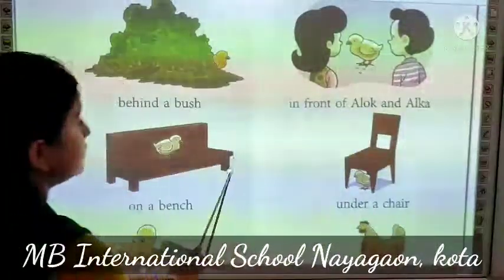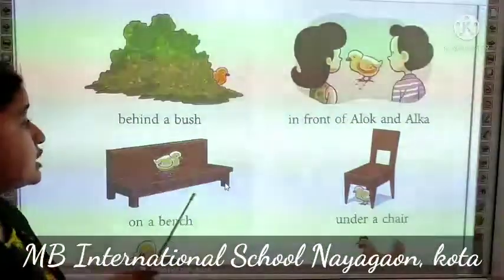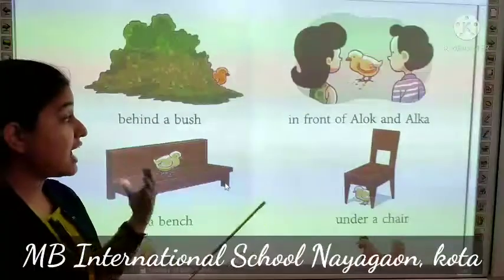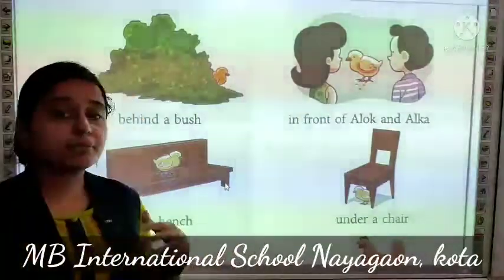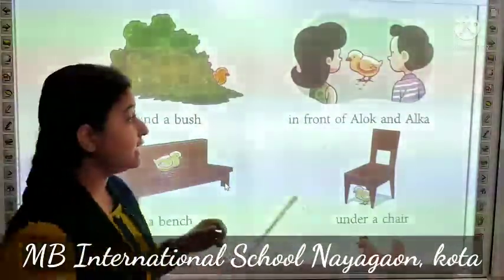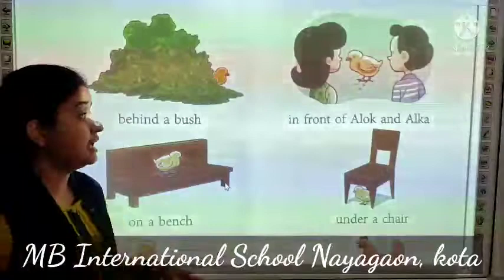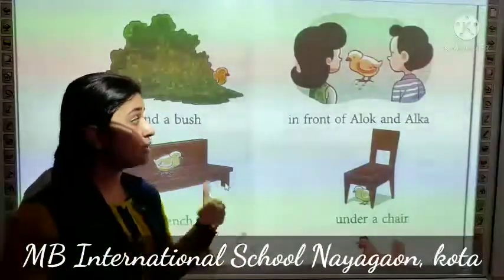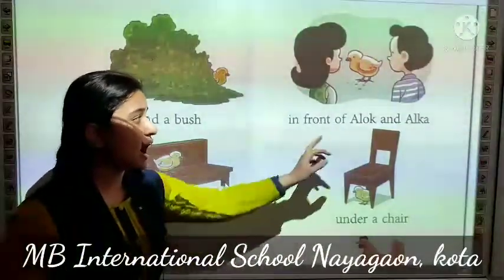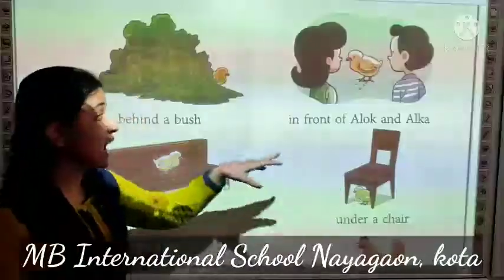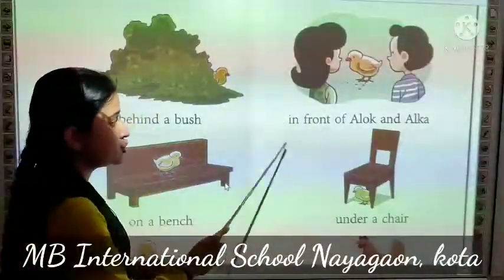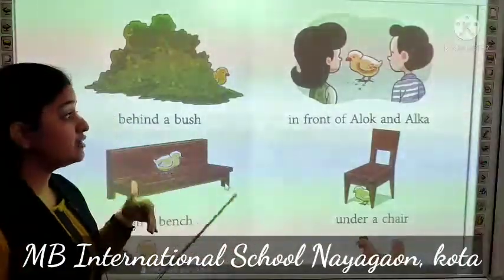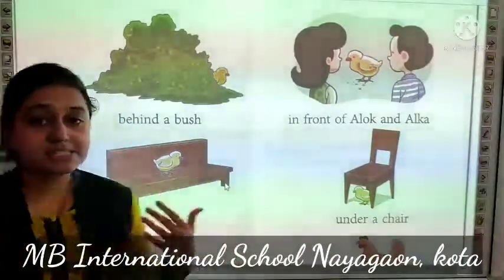Next, chik is in front of Alok and Alka. Ab chik kaha hai — in front of. Yaha pere prepositions word hai in front of, means saamne. A chik is in front of Alok and Alka — joh chik hai woh Alok and Alka ke saamne hai. Toh yaha pere prepositions word hame noun ki place bata raha hai, ki woh in front of means saamne hai.